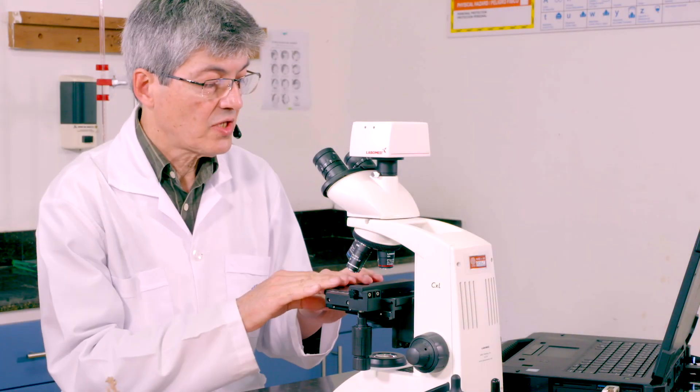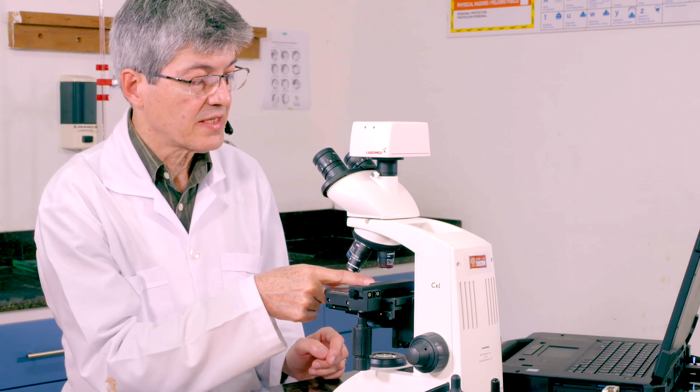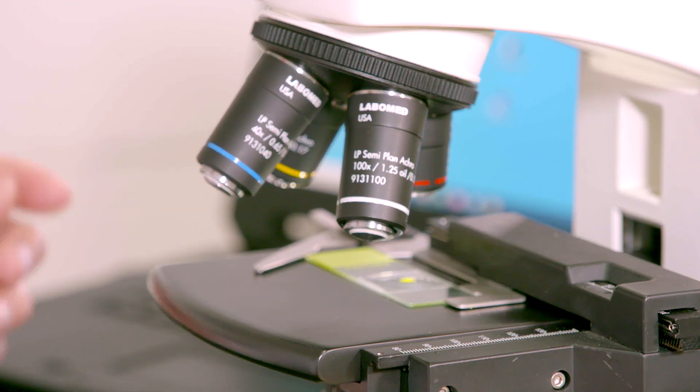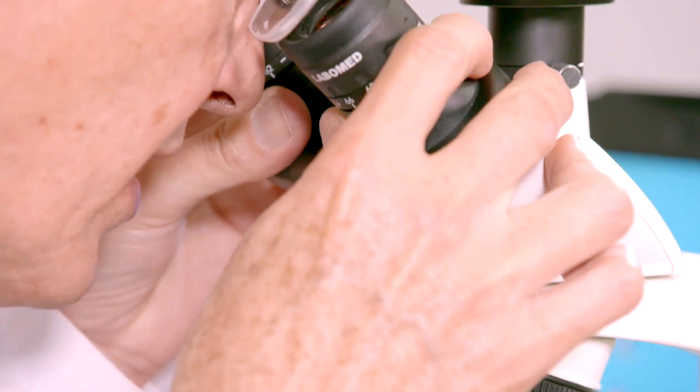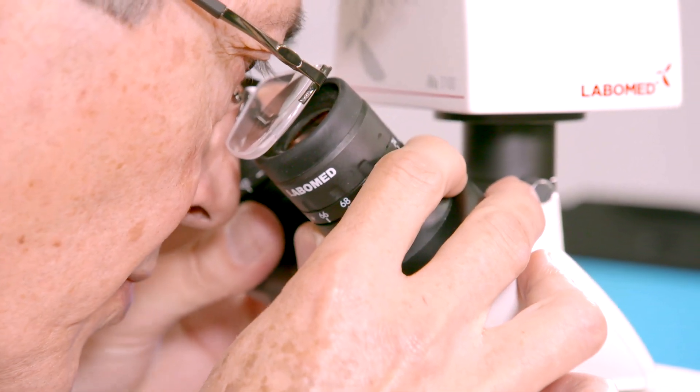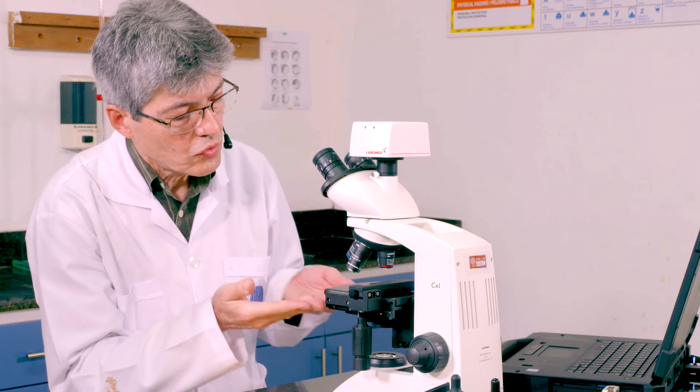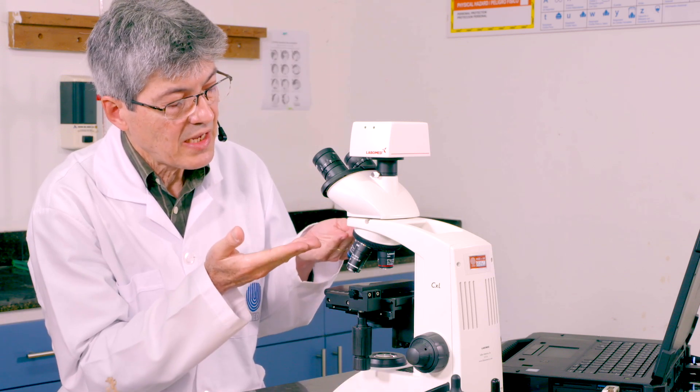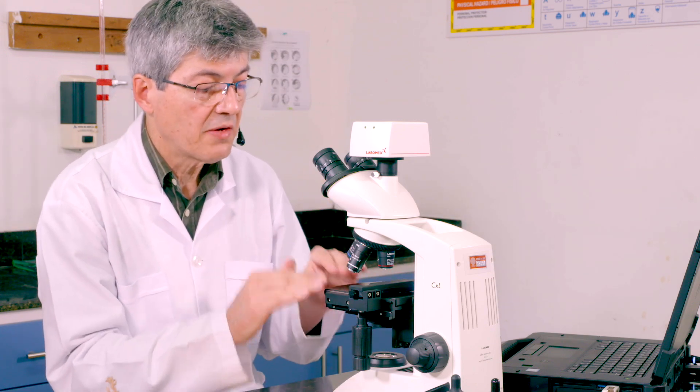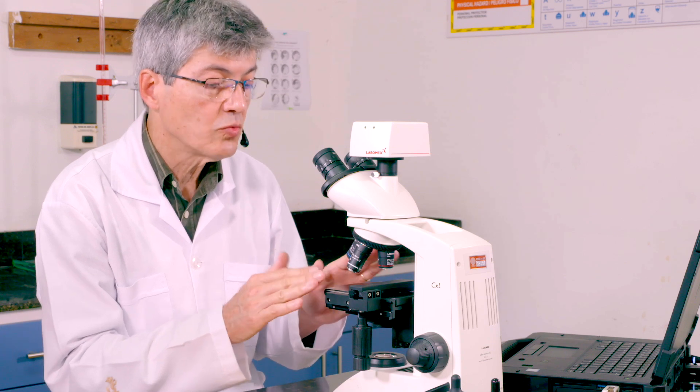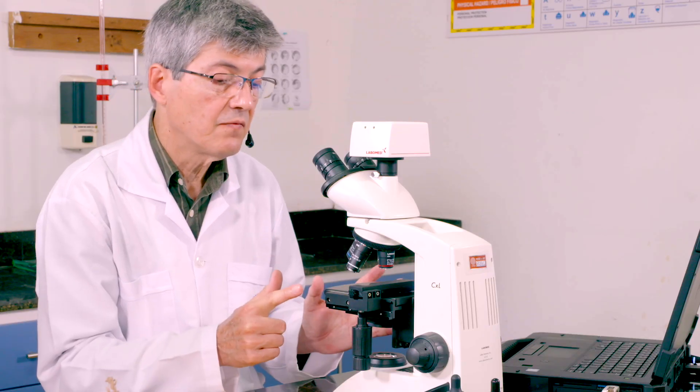Muy bien, nuestra platina tiene que estar abajo. Ya ubicamos la muestra exactamente en el centro, donde va nuestro haz de luz. Procedemos a ver, a adaptar los lentes oculares a nuestros ojos. Y ahí, con el macrométrico, yo voy a ir subiendo la platina hasta que yo vea una imagen más o menos nítida. Una vez que yo vea la imagen más o menos nítida, procedo con el micrométrico para enfocarlo.